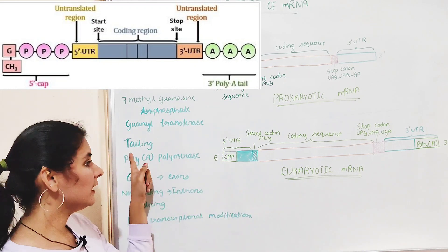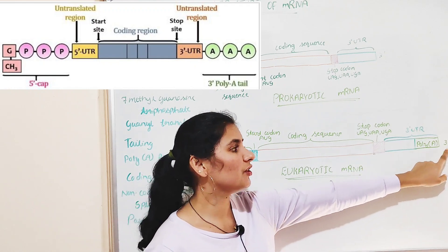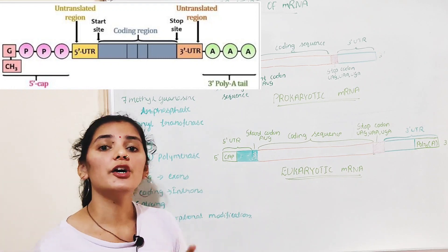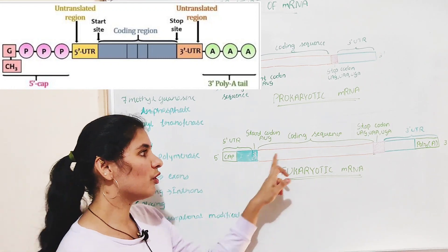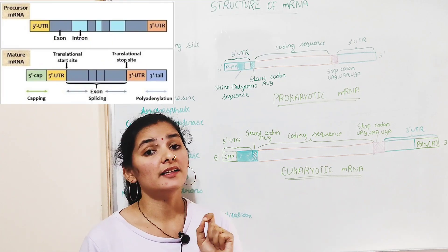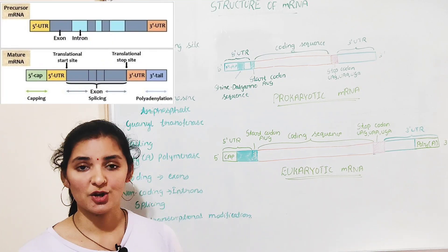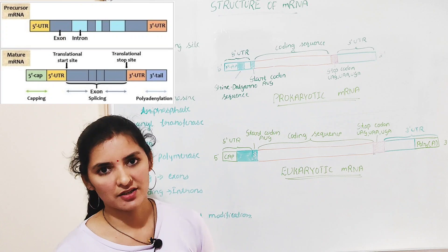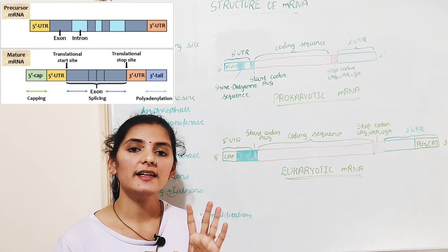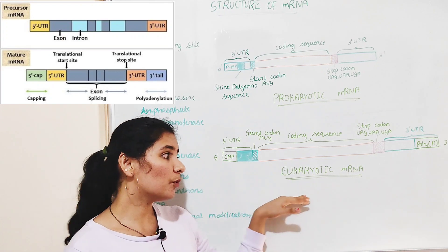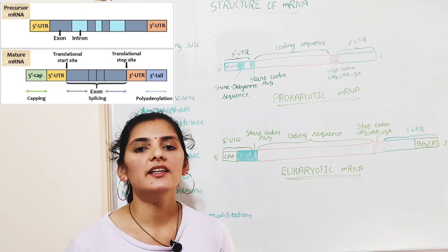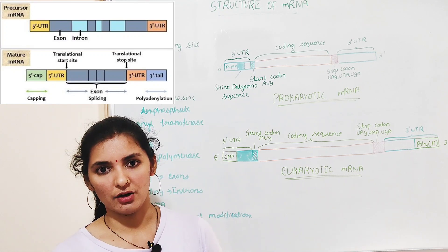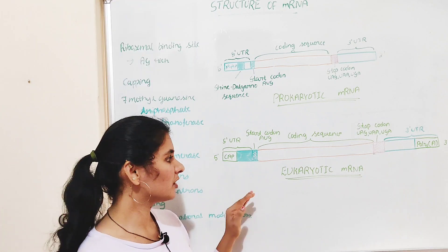The three main steps of post-transcriptional modification are: capping — the addition of 7-methylguanosine triphosphate to the 5' end of eukaryotic mRNA; tailing — the addition of a poly-A tail to the 3' end; and splicing — the removal of introns and joining of exons to form the coding sequence. These three steps change the immature mRNA, or hnRNA, into mature, functional mRNA.